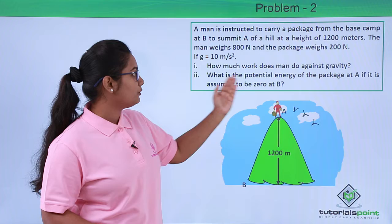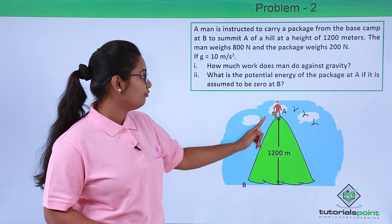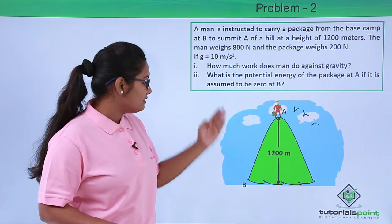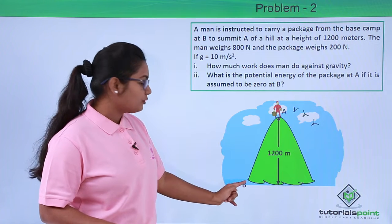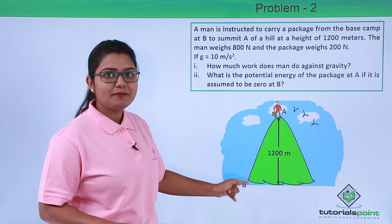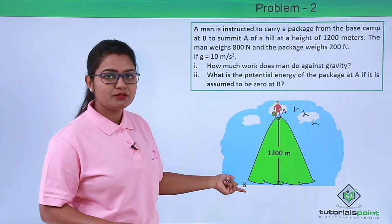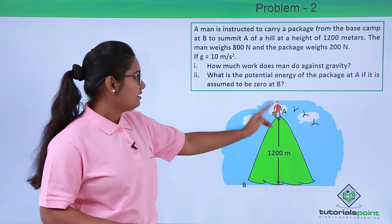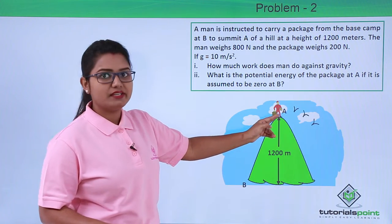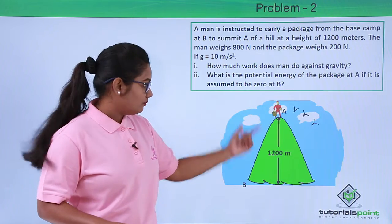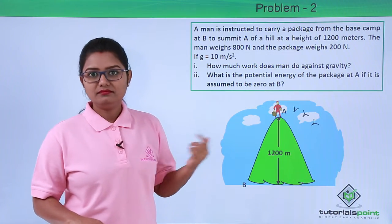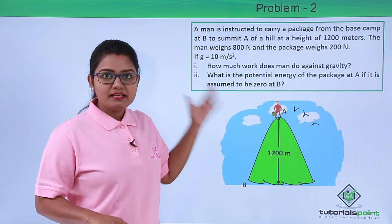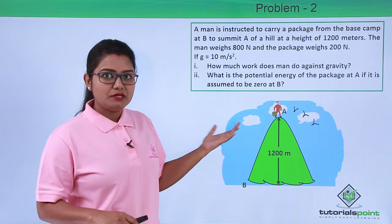We also need to find out what is the potential energy of the package at A, if it is assumed to be zero at B. That means if the potential energy of the package at B is assumed to be zero, then what will be the potential energy of the package at the top of the hill. Now since we have visualized the situation of this problem, let us go ahead and try to solve it.